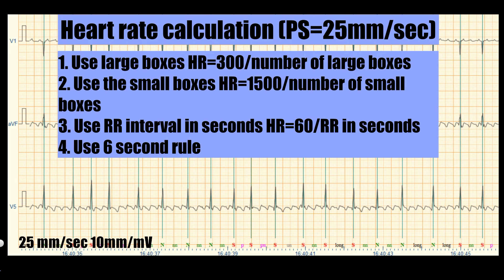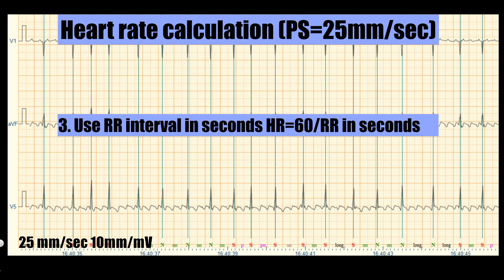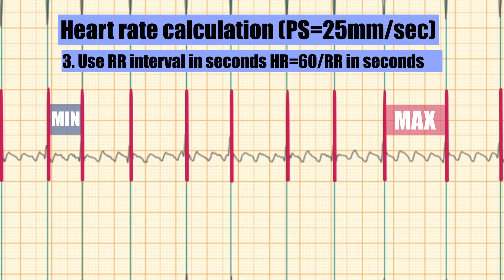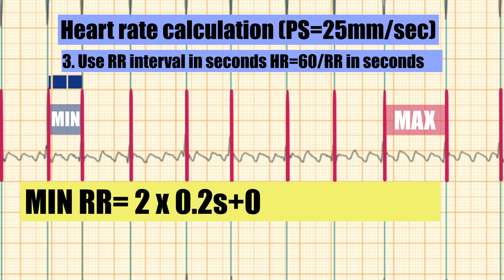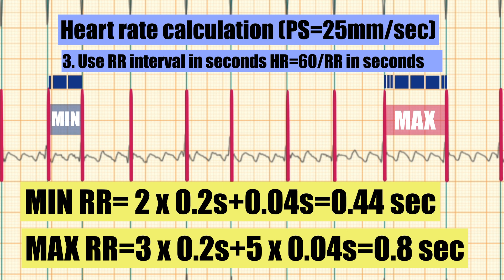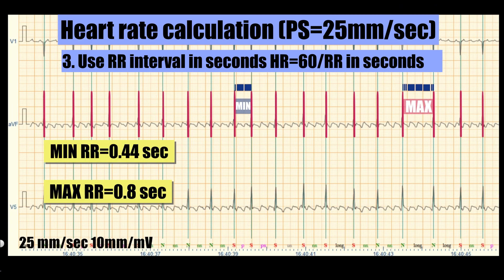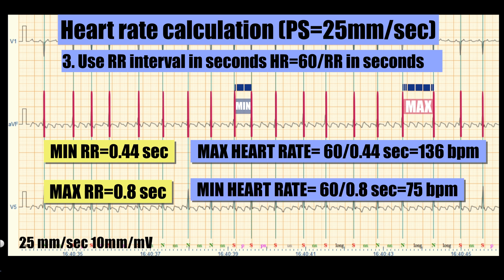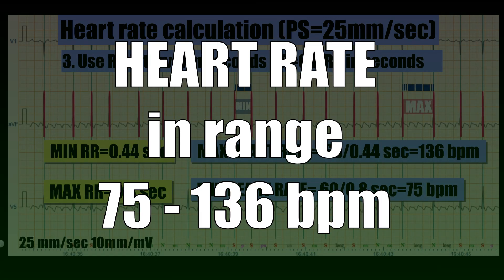I prefer calculating heart rate from both the smallest and largest RR intervals, which gives more information. Using the formula 60 divided by RR interval in seconds: the minimal RR interval is 0.44 seconds and the maximal is 0.80 seconds. This gives heart rates of 136 and 75 beats per minute respectively, so the heart rate ranges from 75 to 136 beats per minute, describing how irregular this rhythm is.